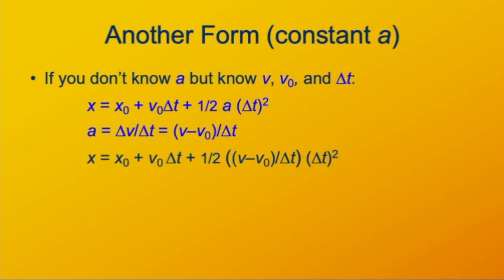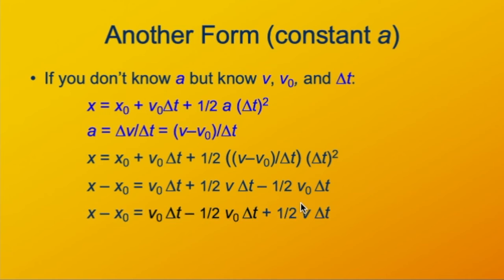x equals x₀ plus v₀Δt. This one half aΔt² term becomes substantially more complex. We're going to evaluate it and try to simplify. We have like terms now because here's another v₀Δt term. Let's combine those.